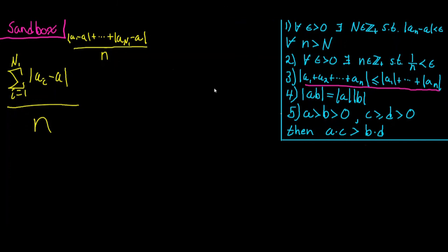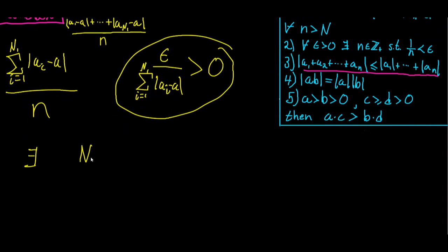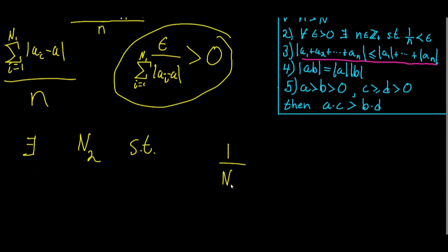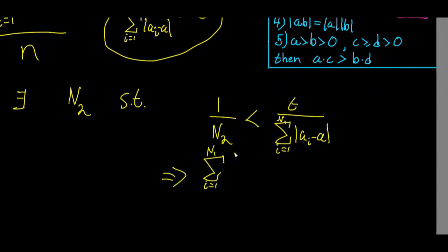For any epsilon strictly greater than zero and any positive number, there exists an N in the positive integers such that 1 over N is strictly less than that number. The number: the sum from i equals 1 to N₁ of the absolute values of aᵢ minus a is certainly strictly greater than zero. By helpful fact 2, there must exist an N₂ in the positive integers such that 1 over N₂ is strictly less than epsilon over that sum. This implies that the sum from i equals 1 to N₁ of absolute value of aᵢ minus a, all over N₂, is strictly less than epsilon.